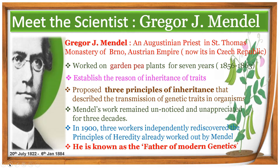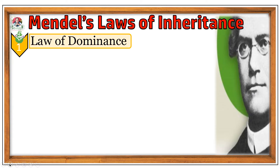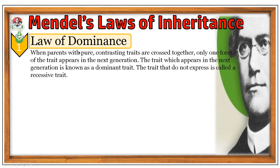Coming to his laws of inheritance, Mendel's first law of inheritance is known as the law of dominance. This law states that when parents with pure contrasting traits are crossed together, only one form of the trait appears in the next generation. The trait which appears in the next generation is known as the dominant trait. The trait that does not express is called a recessive trait.